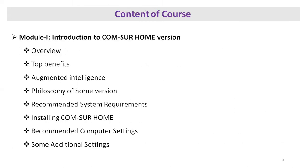What is the content of the course? Module one is an introduction to Compser home version. The points covered include an overview and top benefits. Augmented intelligence means you get the benefit of both human intelligence and artificial intelligence. We also cover the philosophy of the home version, what it is all about, and the recommended system requirements — what type of computer and programs you should have installed.